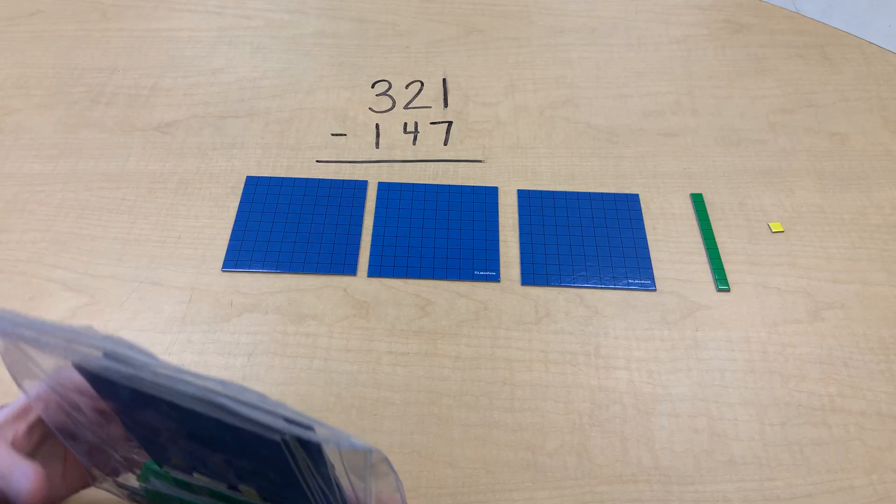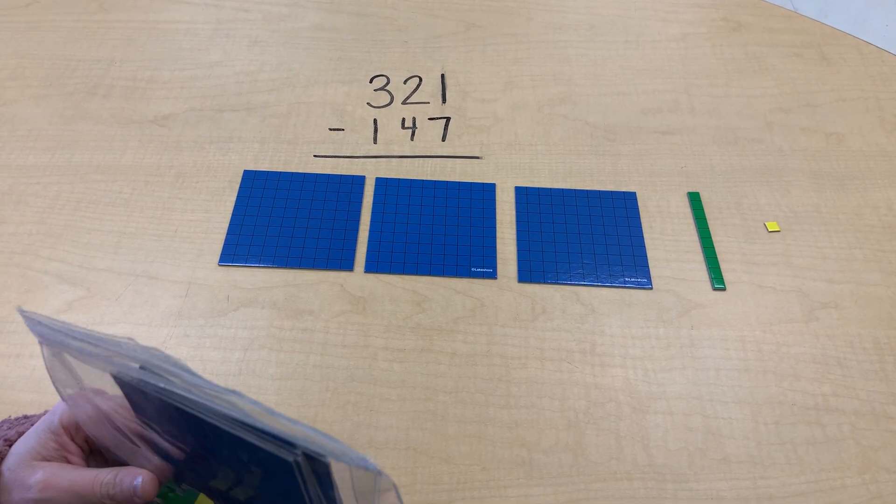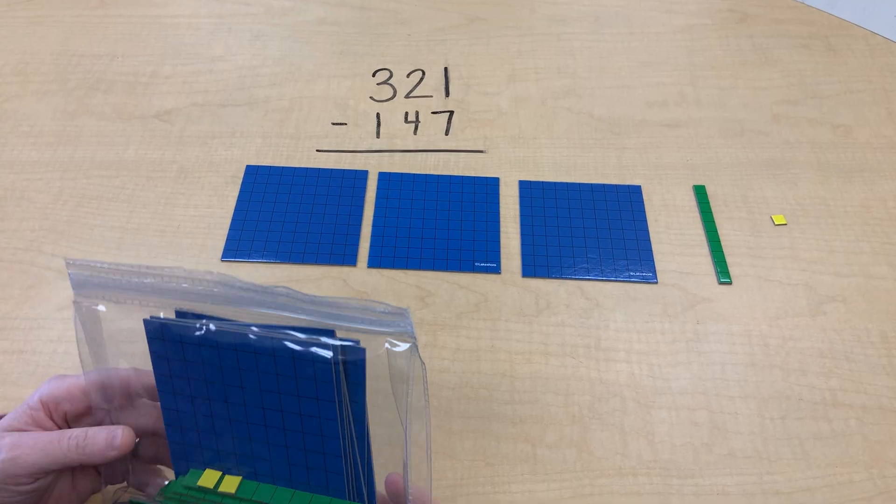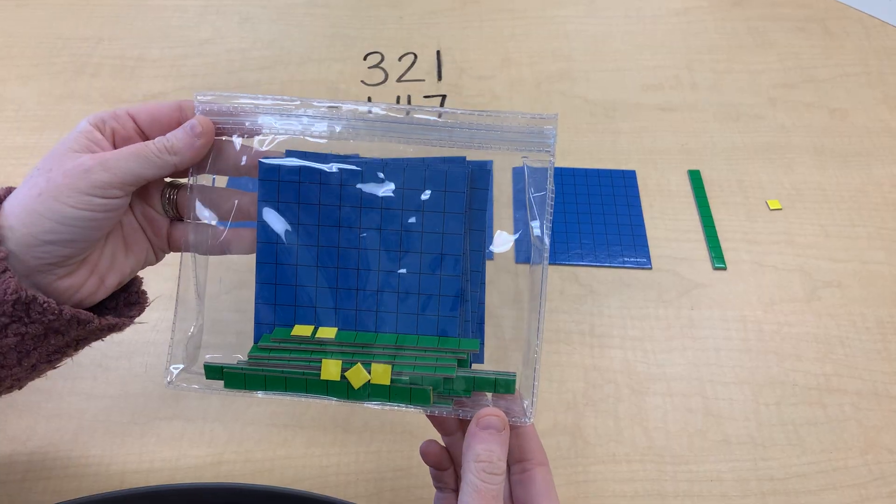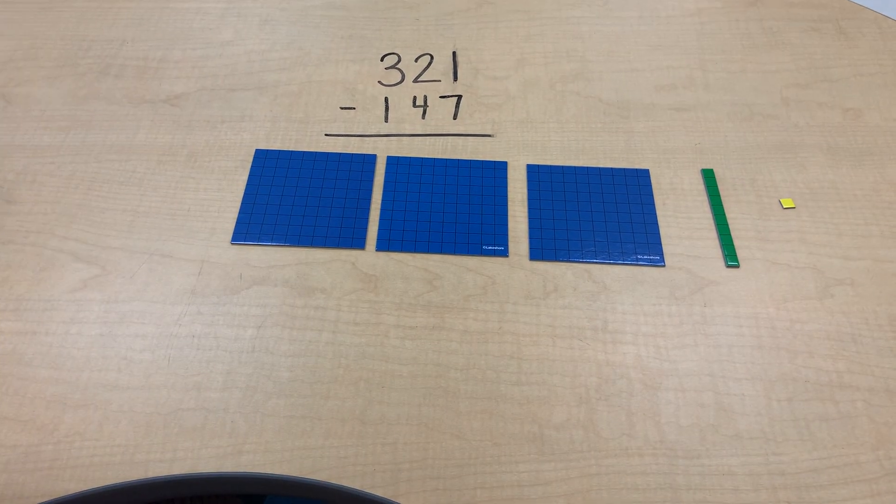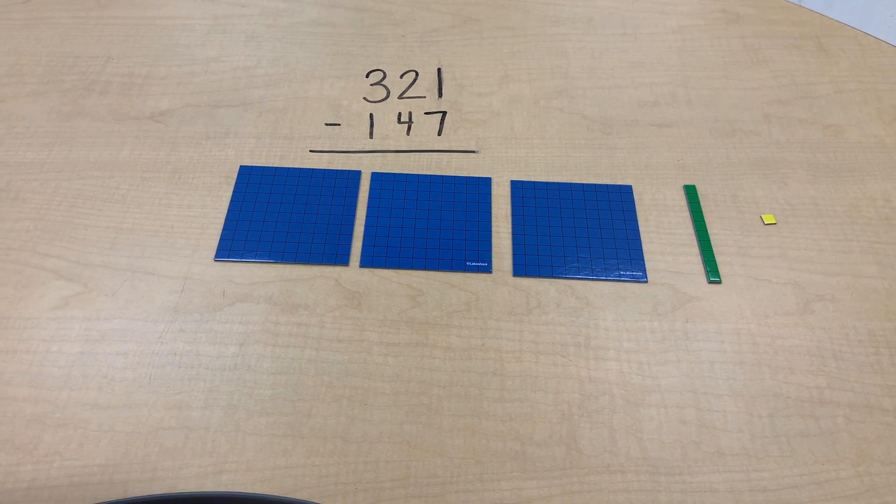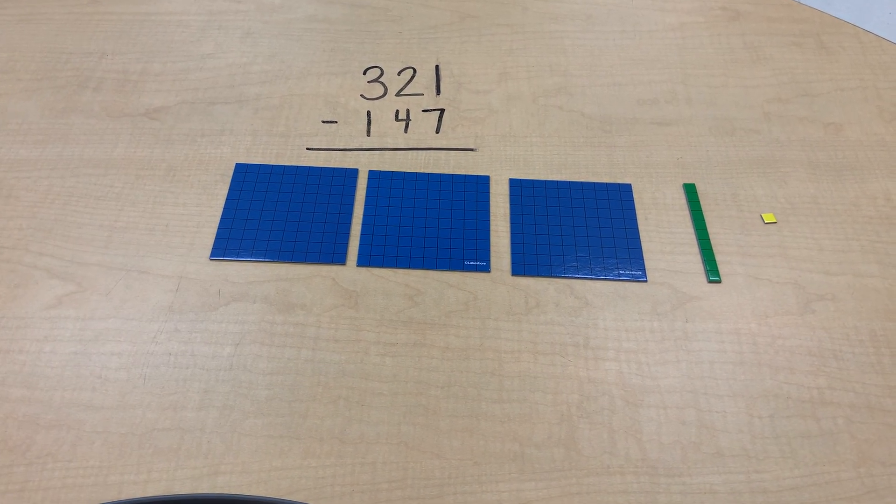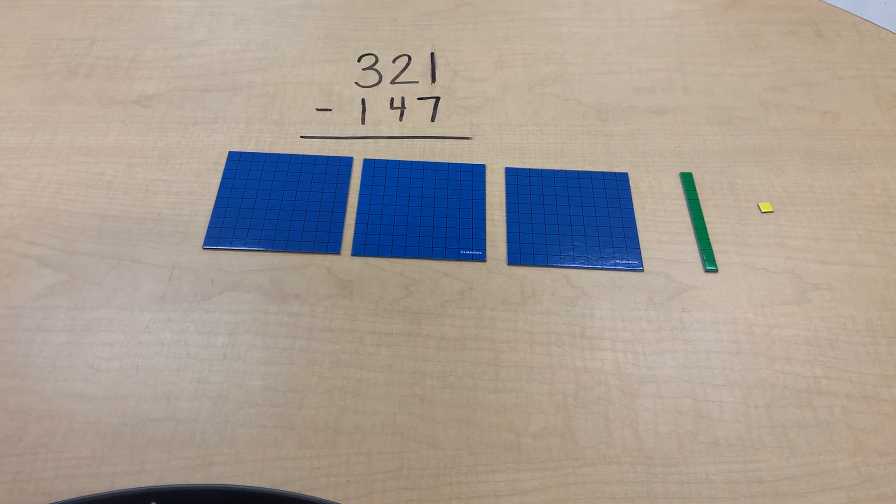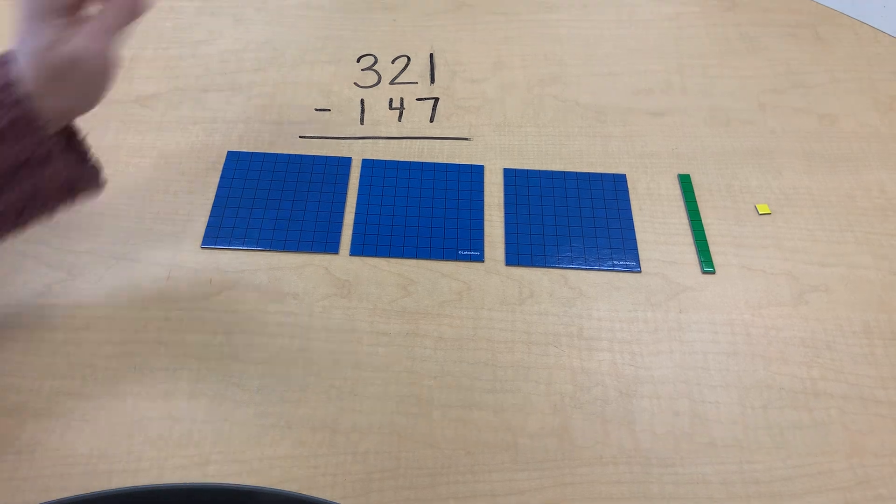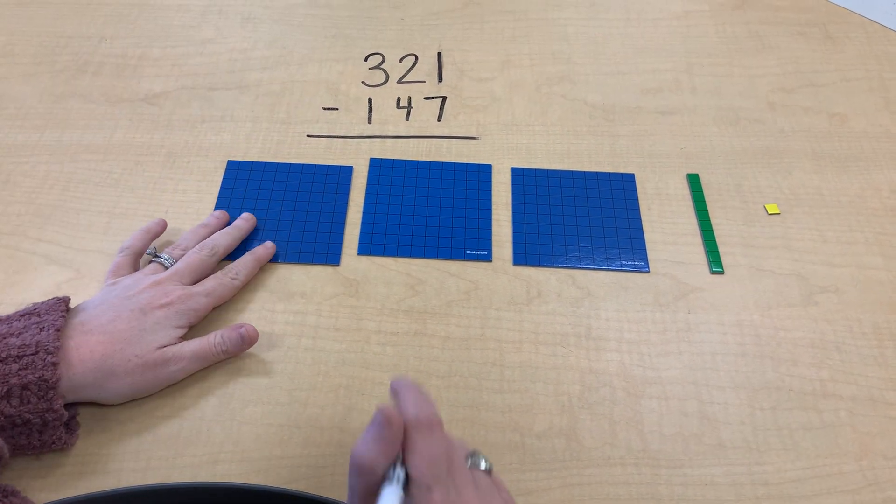I'm going to be showing you how to subtract three-digit numbers with regrouping using base 10. I have a manipulative kit here that has hundreds, tens, and ones inside of it that I'm going to be using to help with taking away. So we have the problem 321 minus 147.